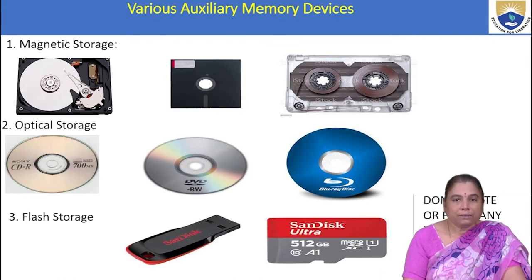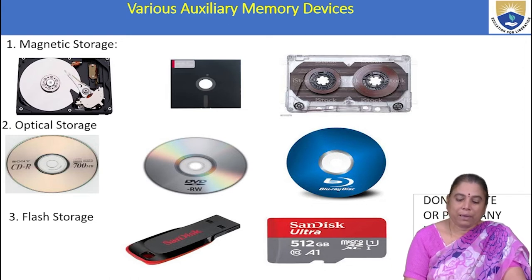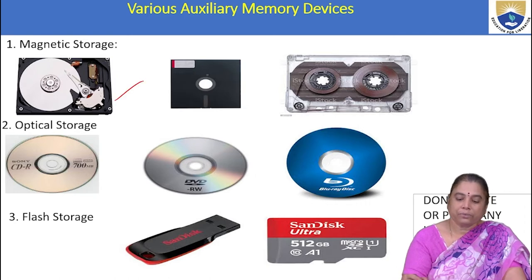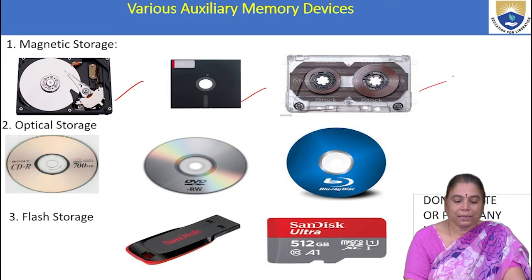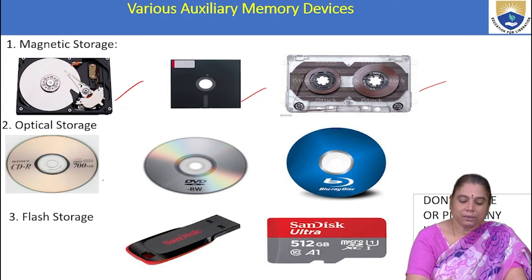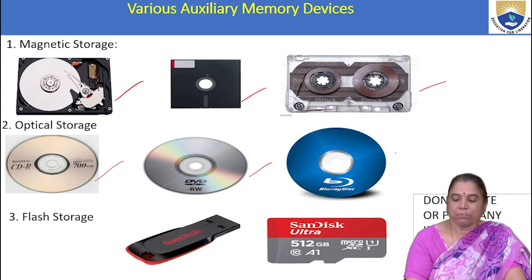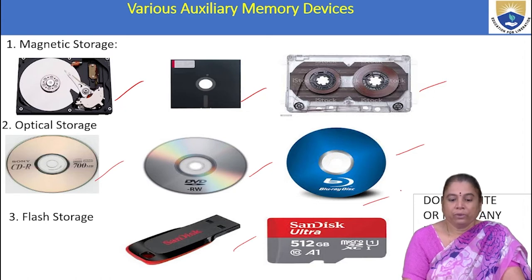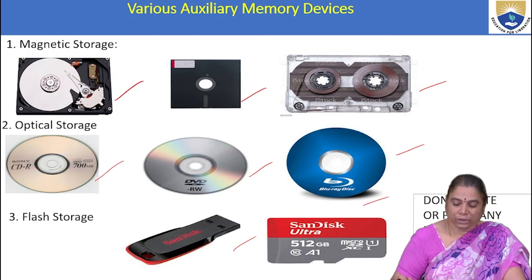The varieties of auxiliary memory devices are: under magnetic storage — hard disk drives, floppy disk, and magnetic tape; under optical storage — CD, DVD, and Blu-ray disk; under flash storage — pen drive and SD card (SanDisk). These are the varieties of auxiliary storage devices.